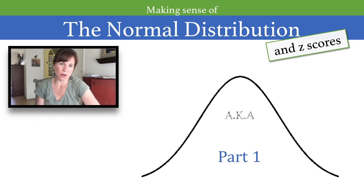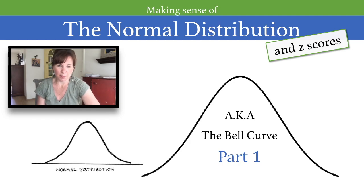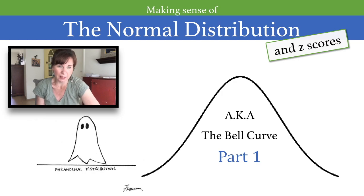The normal distribution, also known as the bell curve, is a very foundational part of statistics. But some people, when they think about the bell curve, they get a bit spooked by it. But it's really not so scary. It's actually quite cool. So let's go check it out.